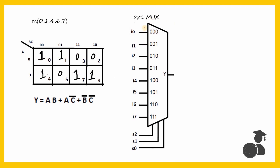The 8-to-1 mux also has eight inputs and three select lines. So there's a direct mapping between the number of variables in our SOP — that is A, B, C — and the number of select lines, as well as between the number of terms in our Kmap and the number of inputs.